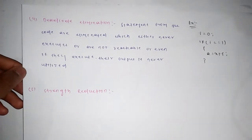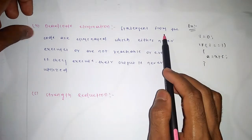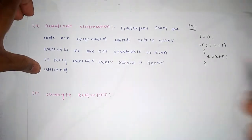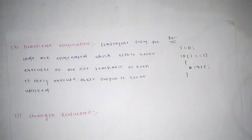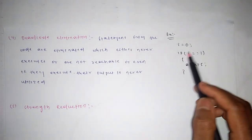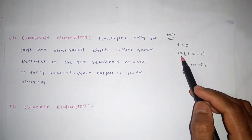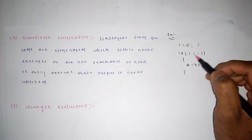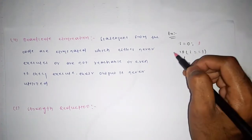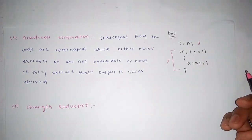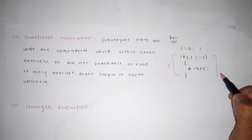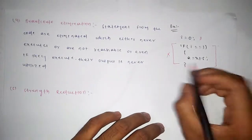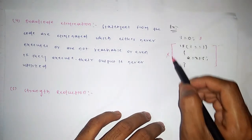Dead code elimination removes statements from the code that either never execute, are not reachable, or whose output is never utilized. For example: i = 0, followed by if (i == 1) then a = x + 5. Since the value of i is 0 but the condition checks if i equals 1, the condition will never be satisfied — this block will never execute. It is called dead code. We can simply eliminate this block and keep i = 0.